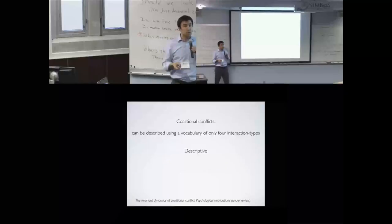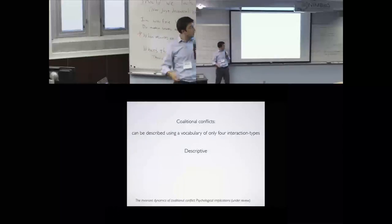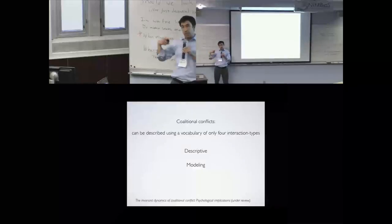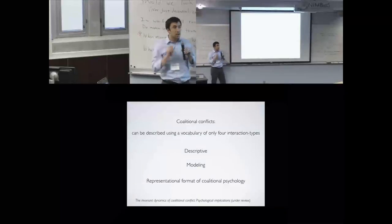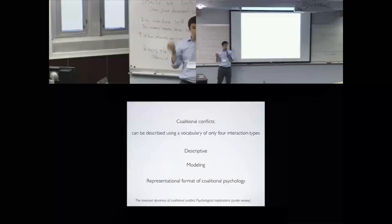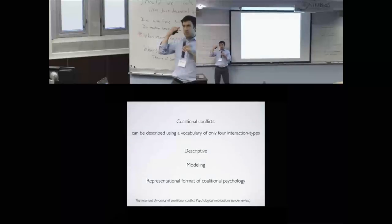Because that's true, the argument is this is going to be a useful tool for people describing coalitional conflicts in the world or in the field. It's also going to be useful for agent-based modeling if you create little agents who are capable of representing just these four interaction types. Finally, and closest to home for me, because these do such an exhaustive job of describing any coalitional conflict, it may actually be, at least at a verbal descriptive level, how the proximate psychology of coalitional planning and decision-making actually represents the possibility spaces.